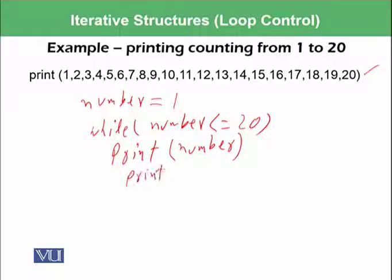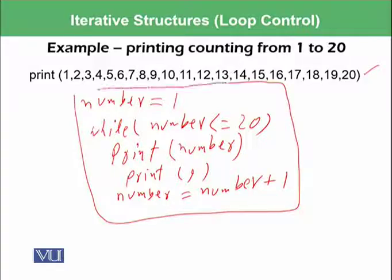And we want to print comma and then number is assigned number plus 1. So this is the pseudocode or the program which we can write in Python which can generate counting from 1 to 20.